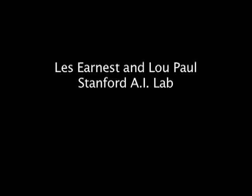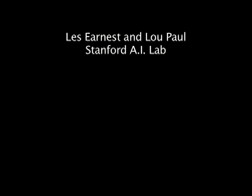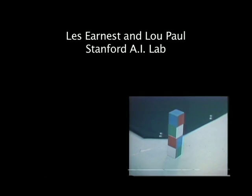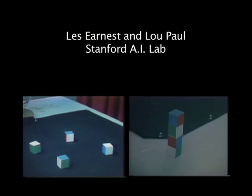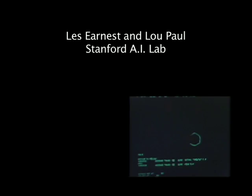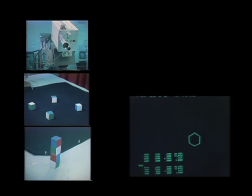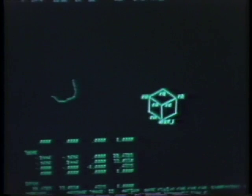You might wonder how a computer system can figure out a three-dimensional position of objects using a two-dimensional image that you get from a television camera. Basically, you calibrate the system so that it knows where the tabletop is in relation to the camera.